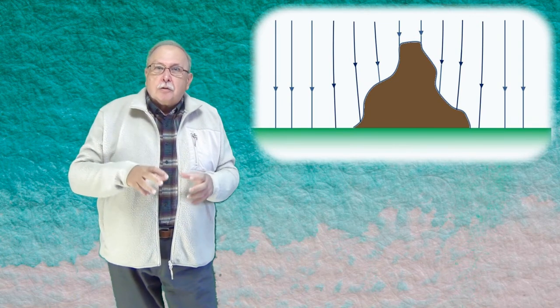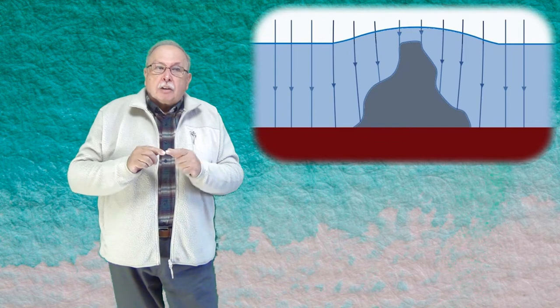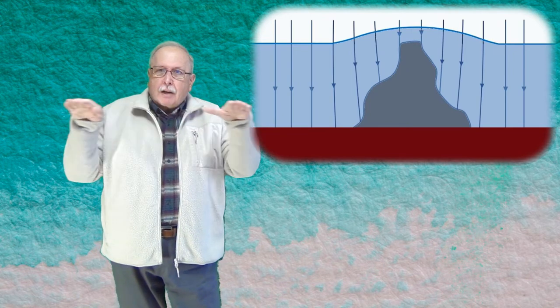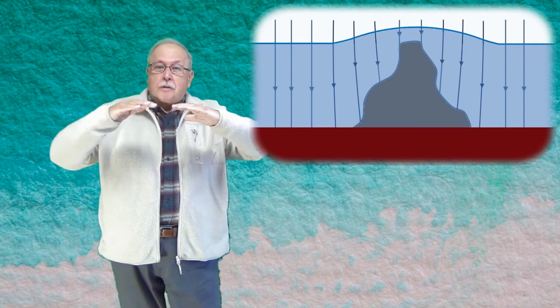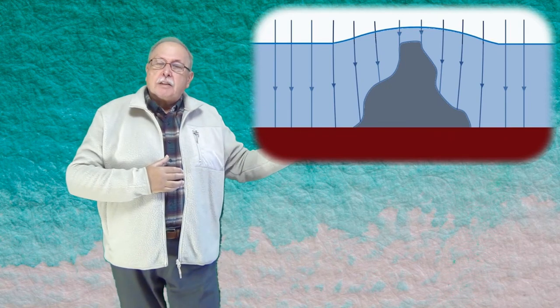Și atunci, dacă muntele este submarin, pentru ca liniile câmpului gravitațional să fie normale la suprafață apei de deasupra lui, suprafața trebuie să se curbeze, așa cum vedeți în desen.